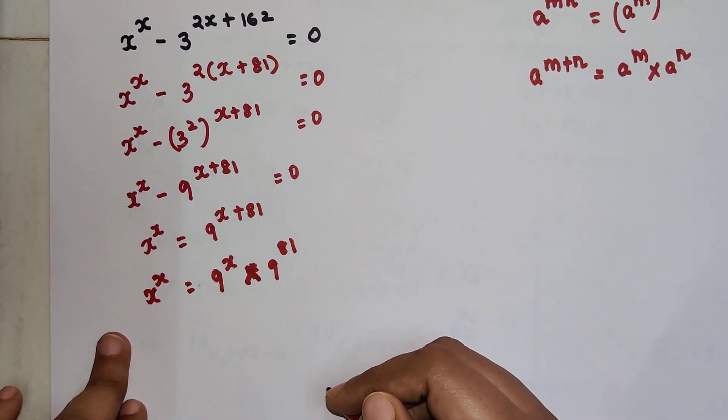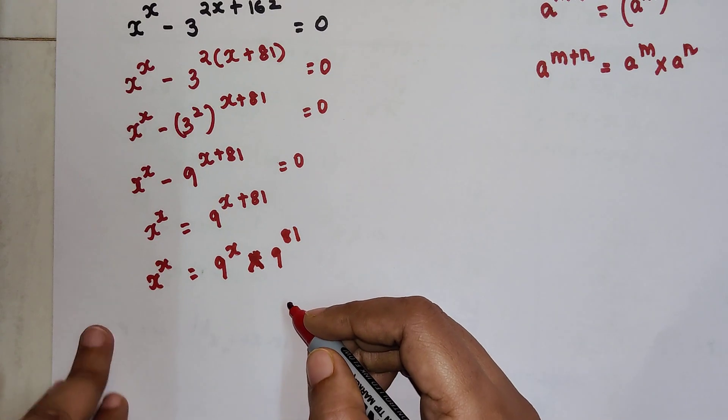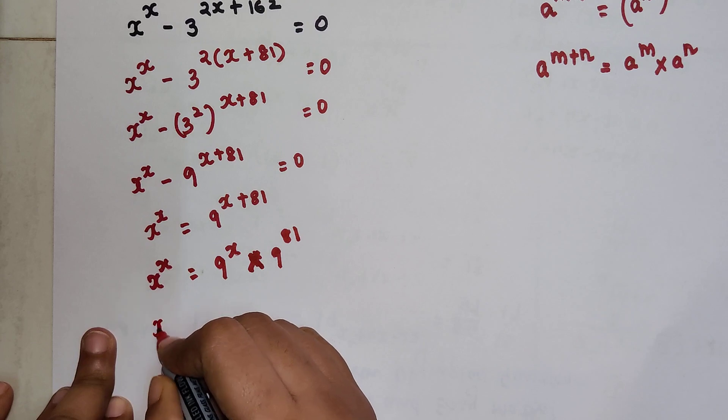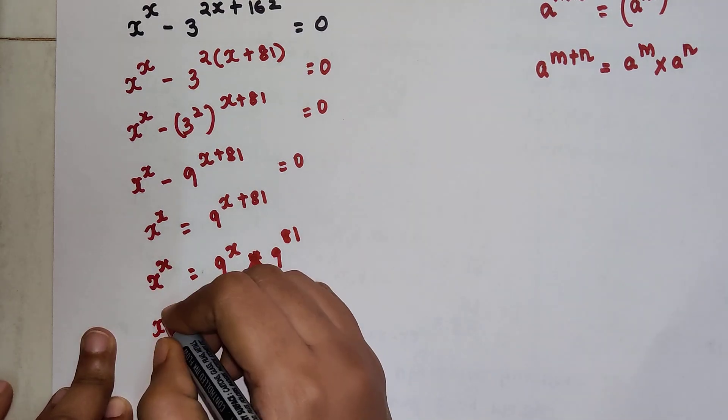So now after this, what we can do is divide both sides by 9 raised to x. Why? Because then only one side of the equation will have variables.